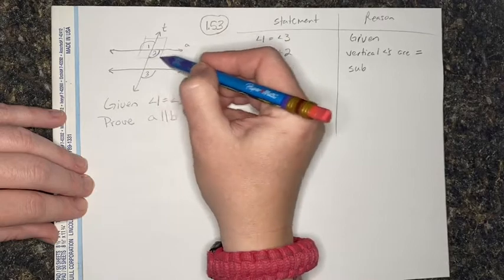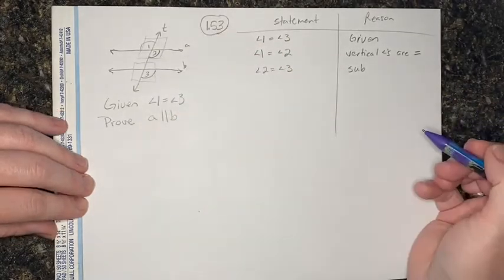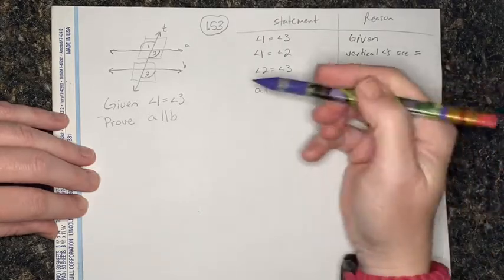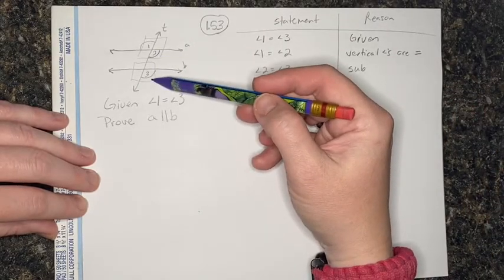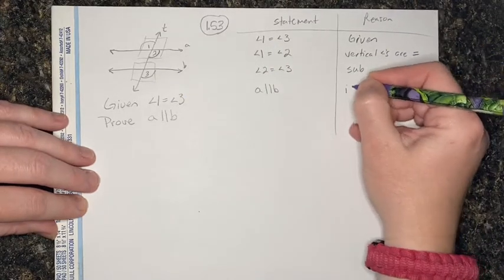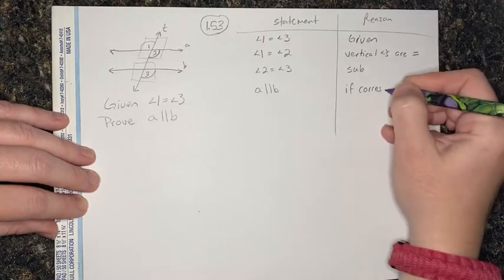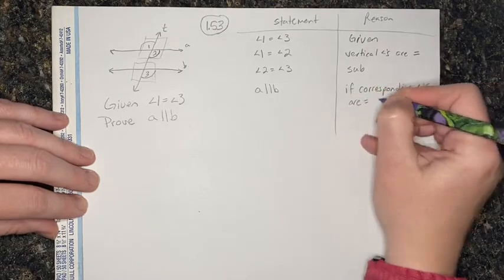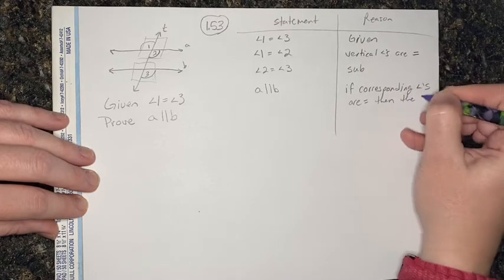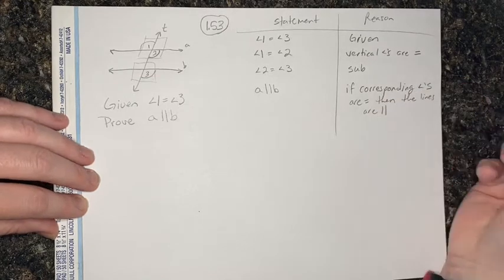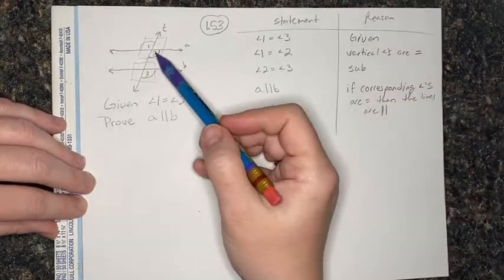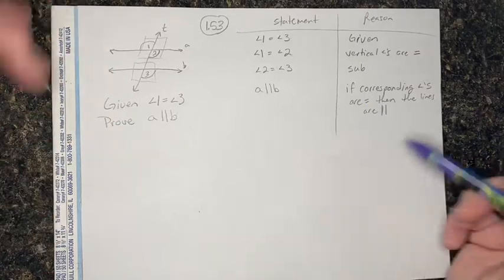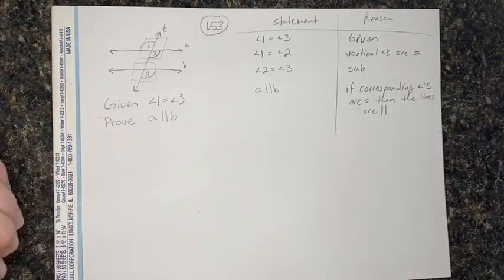Remember when we were talking about relationships of angles and how we drew a box around them? That's what's going to help us here. We can now say that A is parallel to B because angle 2 and angle 3 are in the same part of their box — that makes them corresponding angles. If corresponding angles are equal, then the lines must be parallel. There's our if-then statement we were just reviewing, and that's the proof for number 153.